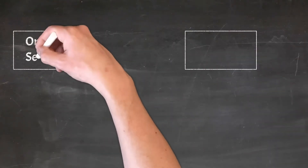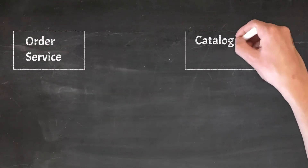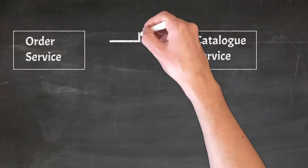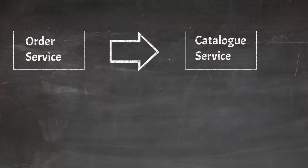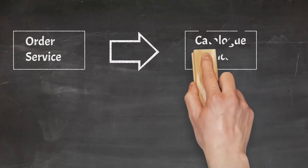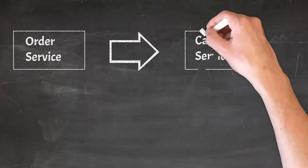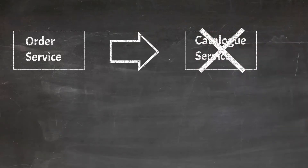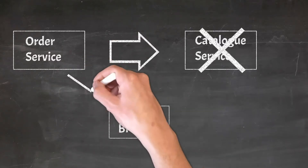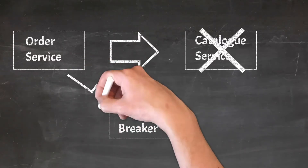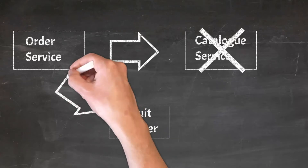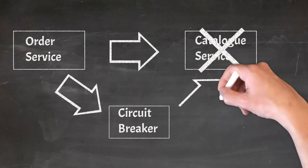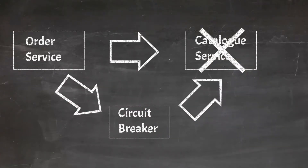Suppose we have two services: order service and catalog service, and the order service calls the catalog service for catalogs. But when the catalog service fails due to some internal failure, the corresponding API of the order service also fails. In order to avoid such situations, we use a circuit breaker. The circuit breaker sends a predefined response back in case there is a failure at the catalog service.